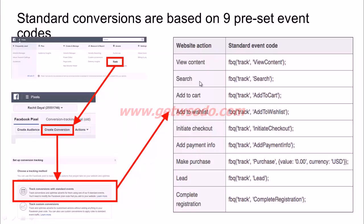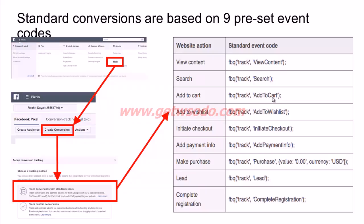You can track people who viewed certain content pages, people who've searched for something, people who've added something to a cart, added to a wish list, initiated a checkout process, added their payment info, made a purchase, signed up as a lead, or completed the registration. If you have any of these pages on your website, you would pick the corresponding code and give it to your tech team to add into the Facebook pixel code on your website. For example, for a view content page or an add to cart page, you would give this single line of code — the standard event code — to your tech team to insert into the existing pixel code on that page.